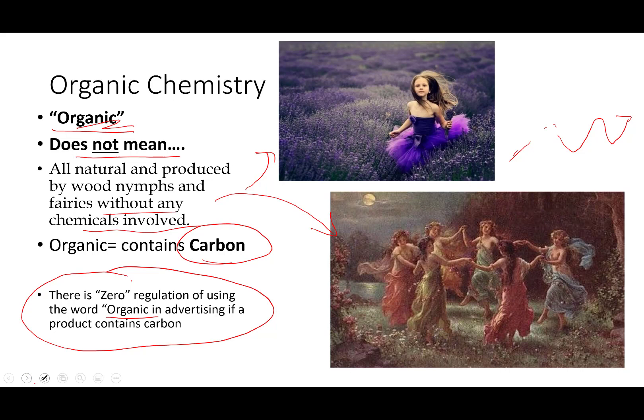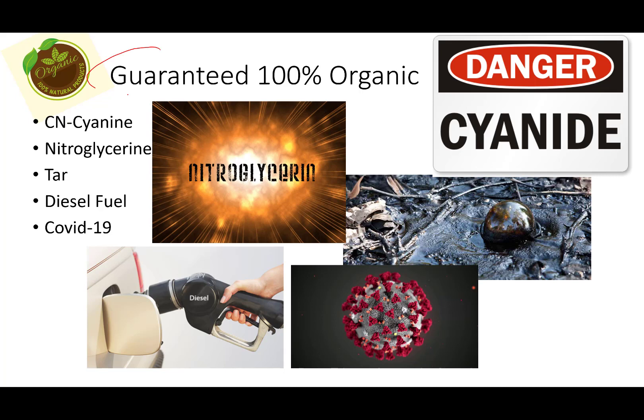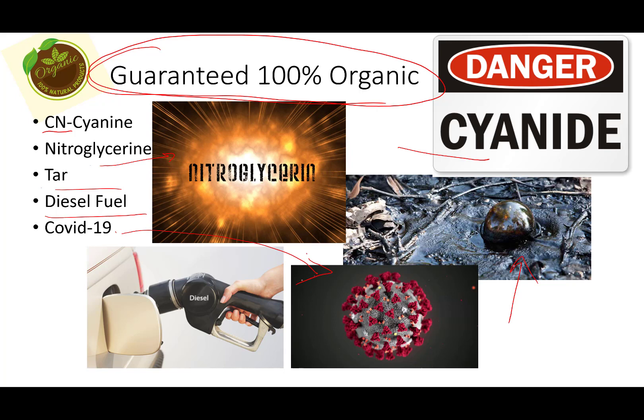There is zero regulation in the U.S. advertising world over the use of the word organic when advertising everything from shampoo to nail polish to bathroom cleaner. What that means is I can guarantee that these substances are all certified 100% organic: cyanide, which is used as a deadly poison, is a carbon-nitrogen compound — 100% organic. Nitroglycerin, the explosive. Tar put on roads to seal cracks — 100% organic. Diesel fuel, gasoline, propane — 100% organic. The COVID-19 virus, that nasty beast — 100% organic, including every fuel you use. The reason is because they all contain the element carbon.